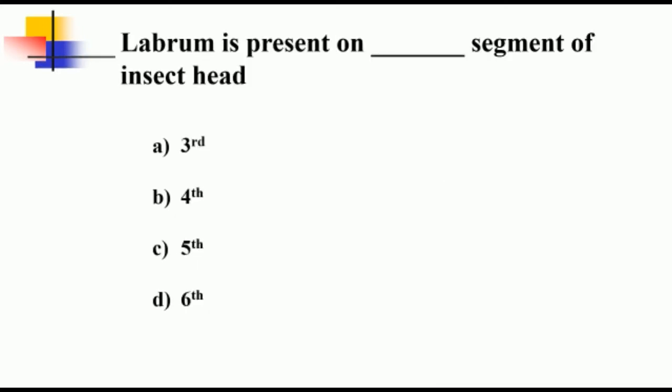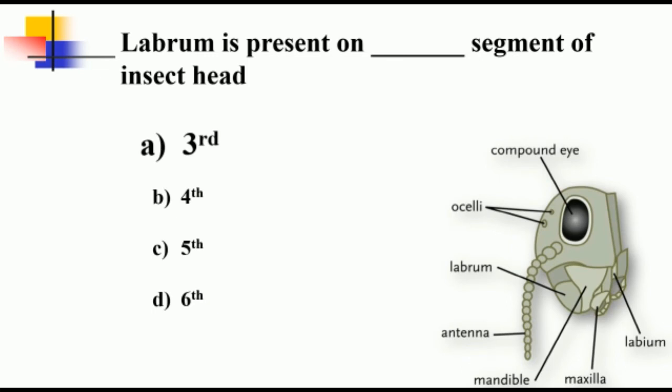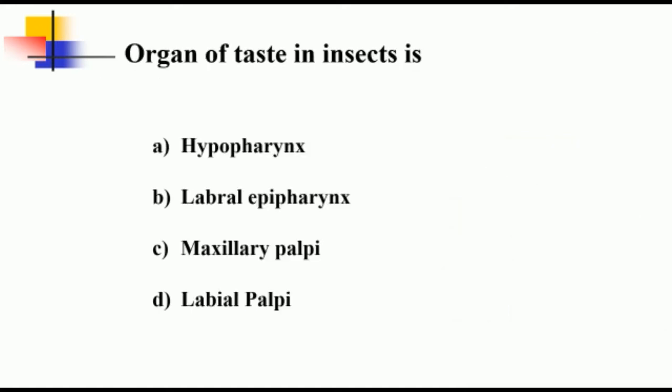Labrum is present on third segment of insect head. The first segment has compound eyes, second segment has antenna, third segment has labrum as I said, fourth segment has mandibles, fifth has maxillae, and sixth, labium is present. The second segment of labrum is referred to as labrum-epipharynx, which is referred to as organ of taste in insects.